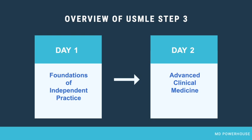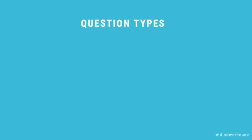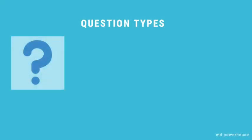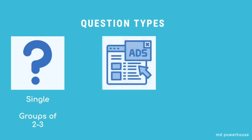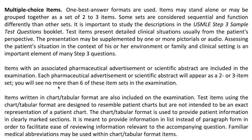On Day 1 you can see either single question types or groups of 2 to 3 questions. You'll also see Pharmaceutical Ads or Scientific Abstracts. These questions appear as a 2 or 3 item set, and according to the USMLE, you won't see more than 6 of these types of question sets in the actual exam.